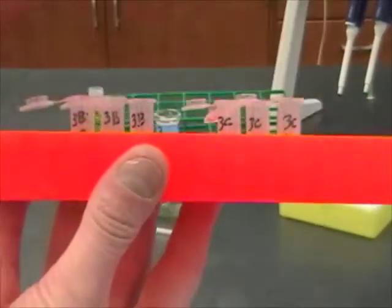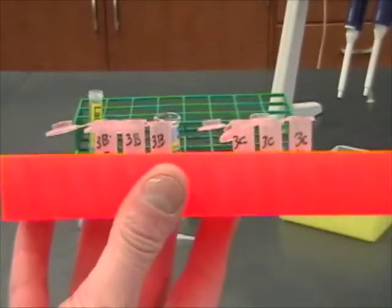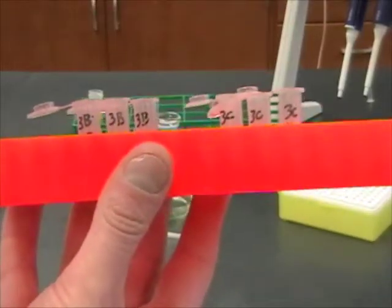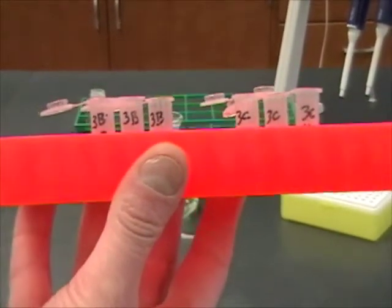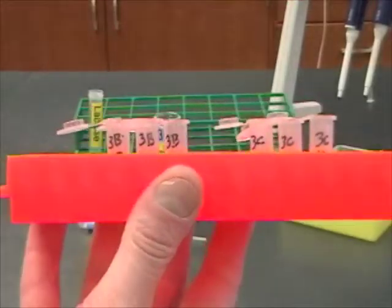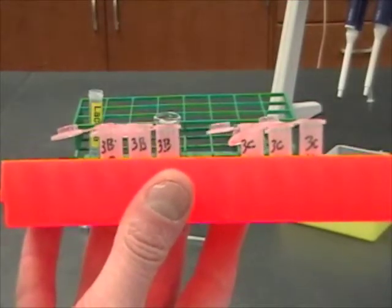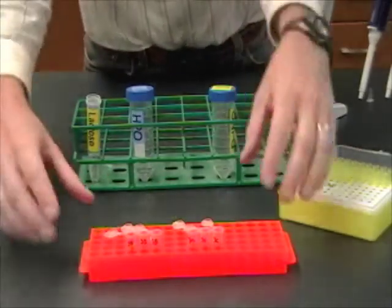Now, there's just six tubes here, but these are only the tubes that I need. Everybody in the lab is going to need the six tubes labeled 1B, 2B, et cetera. So, there's going to be a lot of tubes in here. You've got to get them all measured out before you start.